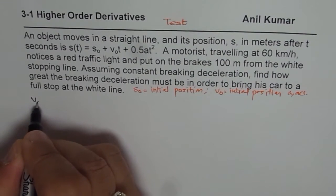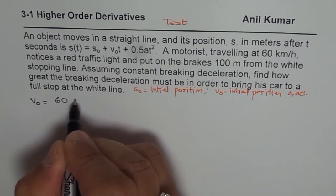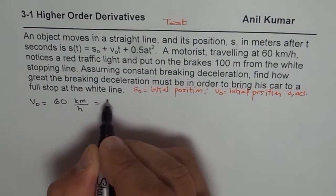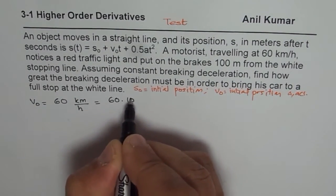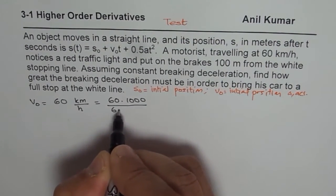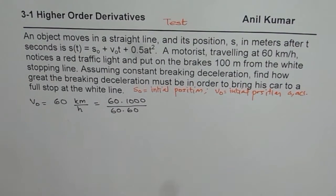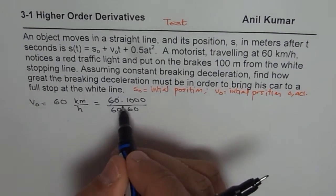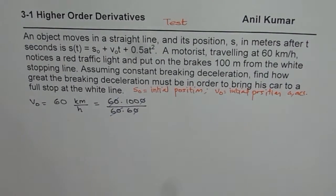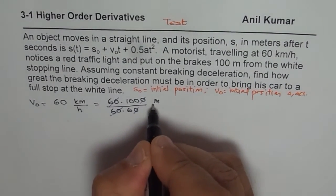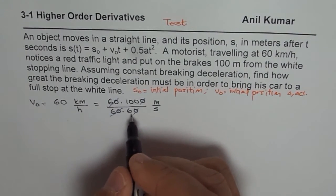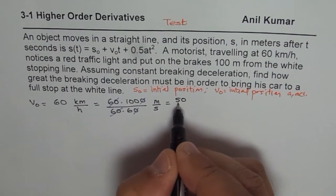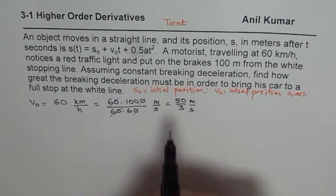The motorist is traveling at 60 kilometers per hour. That means the initial velocity, v₀, is given to us as 60 kilometers per hour. We should convert that to meters per second. So it would be 60 times 1000 divided by 60 times 60. So that is how we can convert it into meters per second. So 60, 60 gets cancelled. So we can further divide by 2. So we get 50 over 3 meters per second. So that is the velocity.